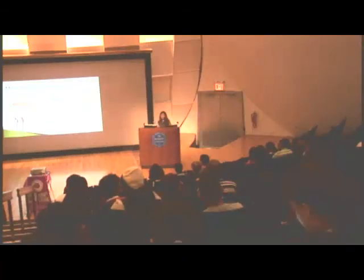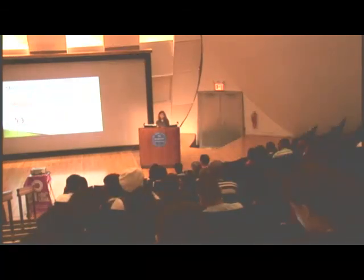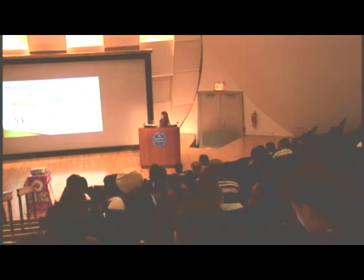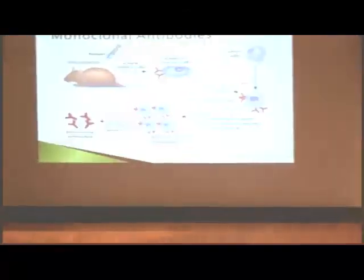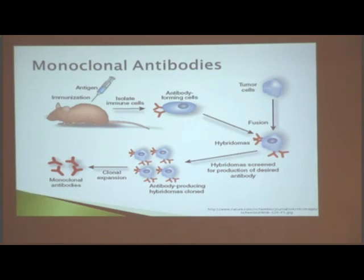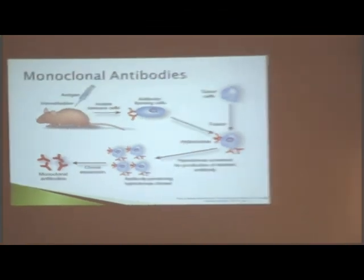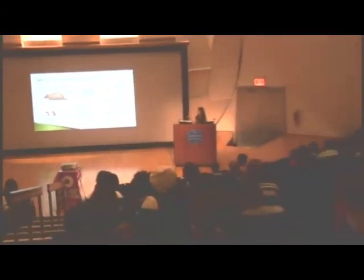I don't actually produce the antibodies in the lab — we get them from distributors who make them. What they do is take the B cells from the mouse and fuse them with separate tumor cells. You inject an antigen into the mouse, the B cells the mouse produces are fused with the tumor cell — they're different — so you just take the B cell from the mouse.